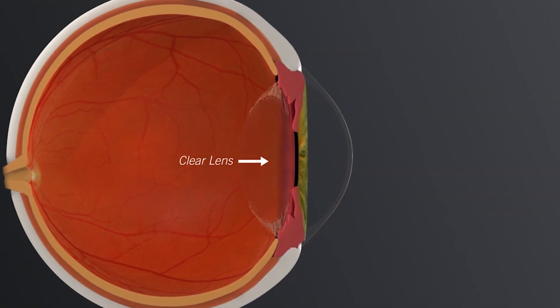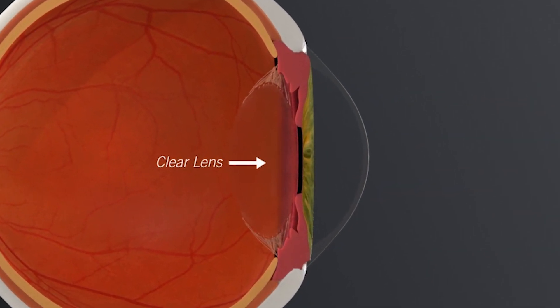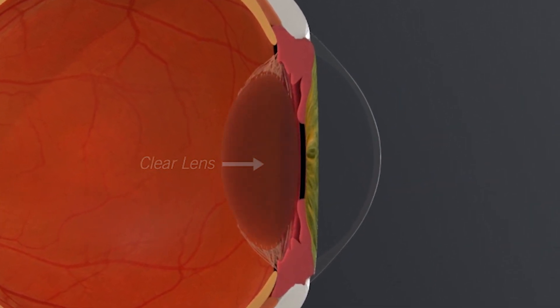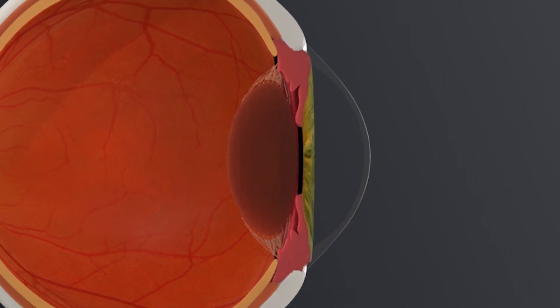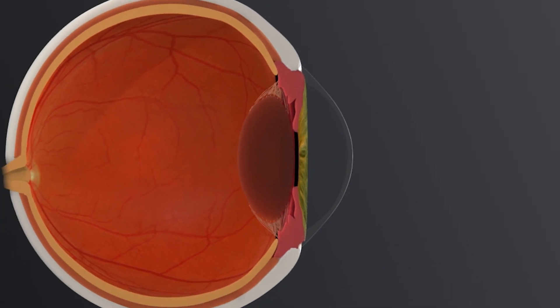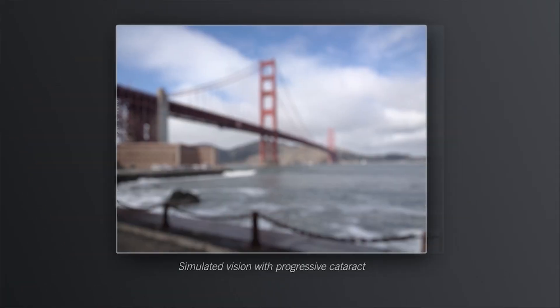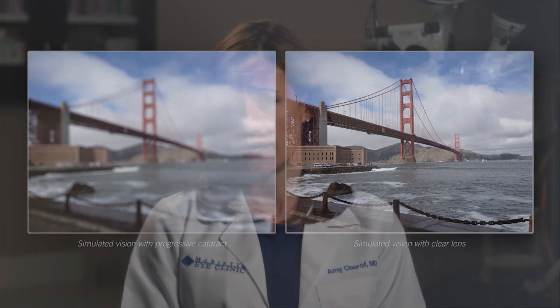However, as we get older, this lens inside of our eye gets thicker, gets less flexible, cloudy, and more hazy, causing problems with our vision. Typically this is a result of age-related changes.